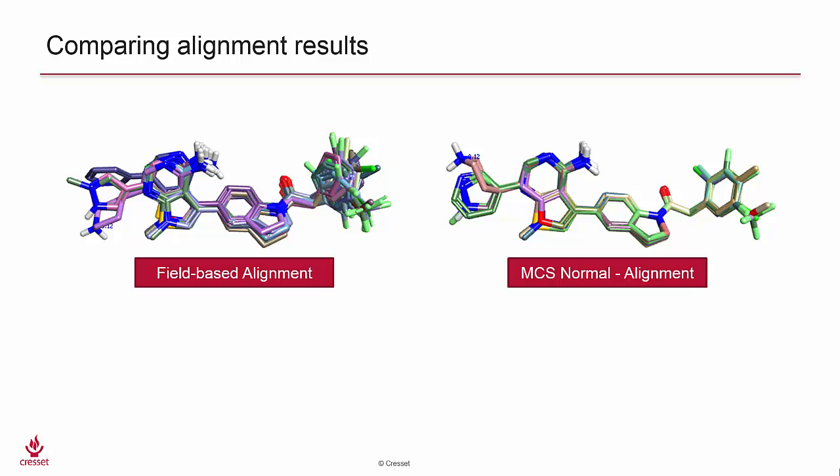the MCS normal results produce an alignment where common substructure is overlaid so that non-common features can be quickly isolated and examined. This can be useful for identifying structure-activity relationships for a library built on a single scaffold with functional variations around the core. For more diverse sets, the MCS option is not preferred.